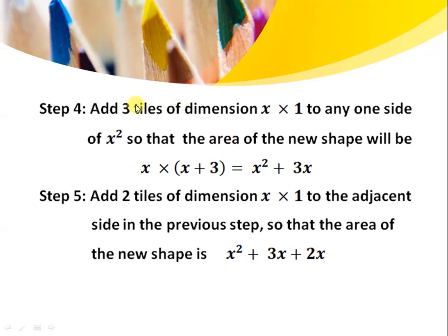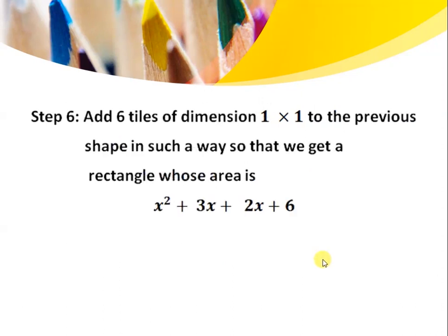Initially we place a square of dimension x. Then we add 3 tiles of dimension x cross 1 to one side of the x squared tile, so the area of the new shape is x squared plus 3x. Then we add 2 tiles of dimension x cross 1 to the adjacent side, giving x squared plus 3x plus 2x. Finally, we add 6 tiles of dimension 1 cross 1, so the total area is x squared plus 3x plus 2x plus 6.